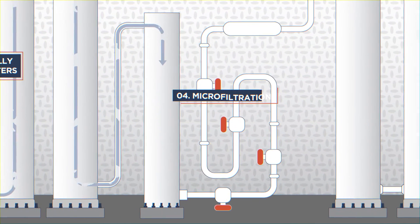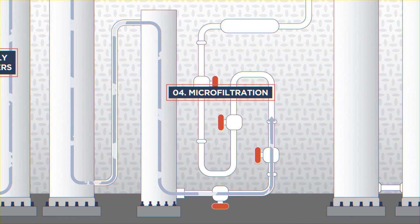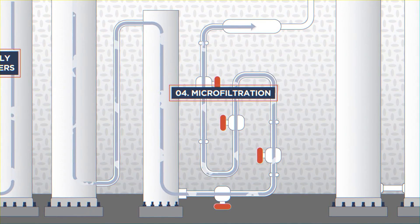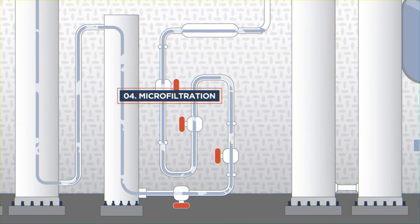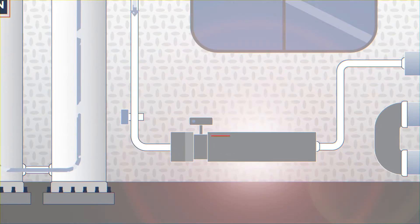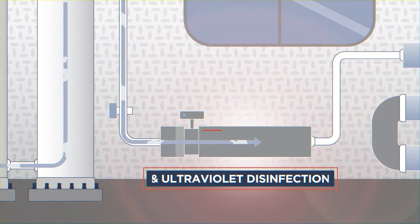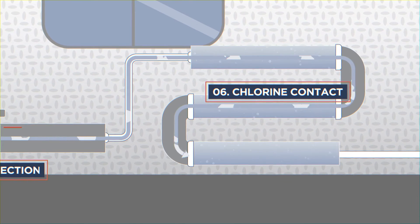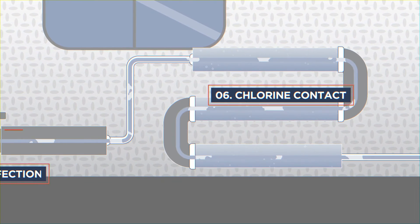The water goes through a membrane process of microfiltration that only allows water and the smallest particles to go through. The nearly pure water is then routed through granulated activated carbon reactor and an ultraviolet disinfection. Finally, a chlorine contactor cleans the water, ensuring it meets drinking standards.